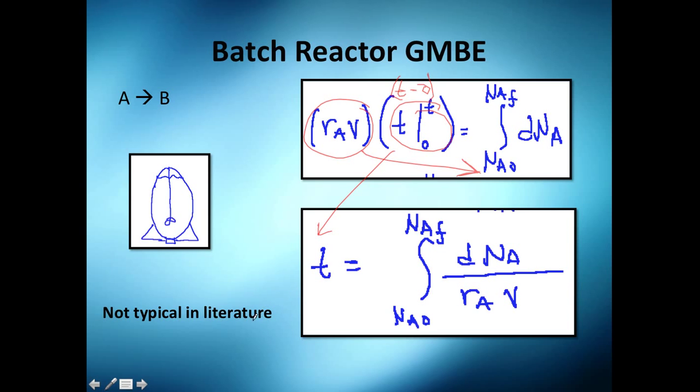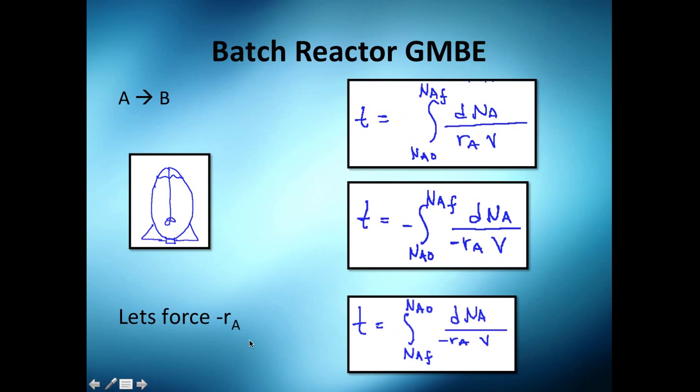The thing here is that this is not that typical in literature because we love minus r_A, the rate of production in negative terms. So let's force this value here in here. So what do we do? Essentially if I want to get this minus symbol I need to multiply it up here.